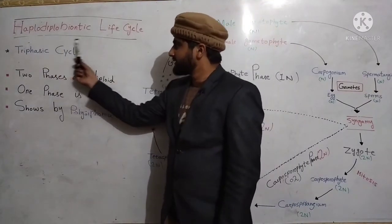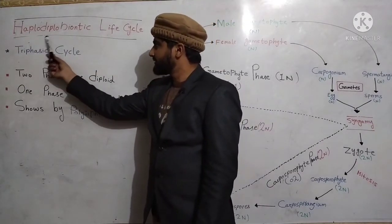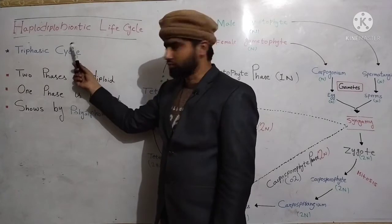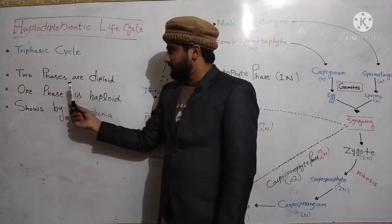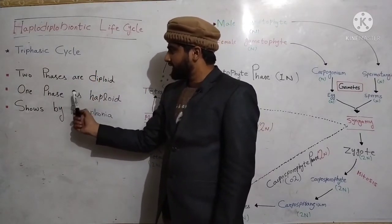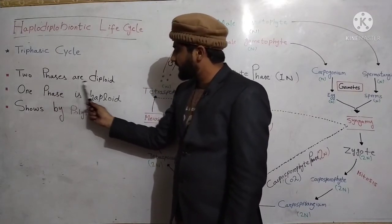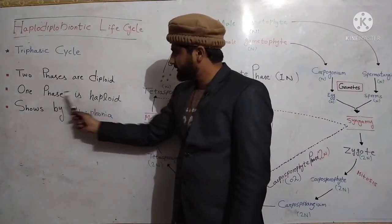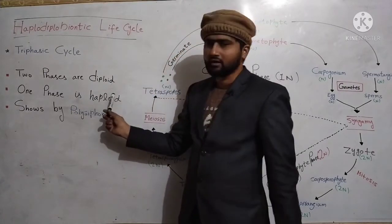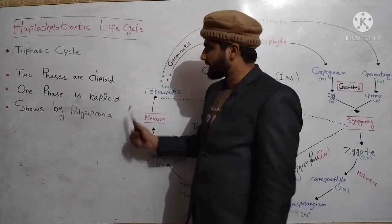As indicated by the name, haplo means haploid, diplo means diploid, and biontic means two. According to definition, a life cycle in which two phases are diploid and one phase is haploid is called a haplodiplobiontic life cycle.